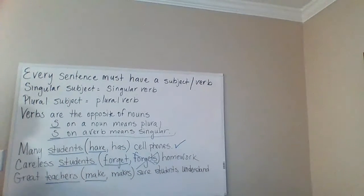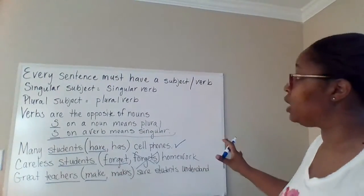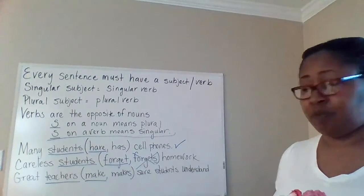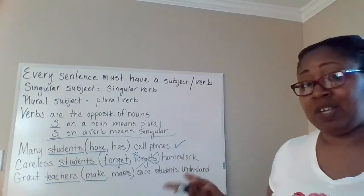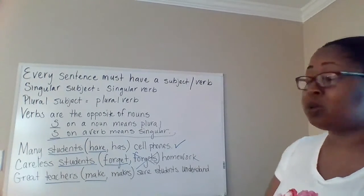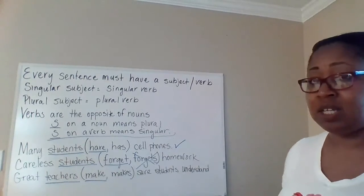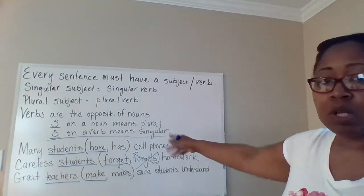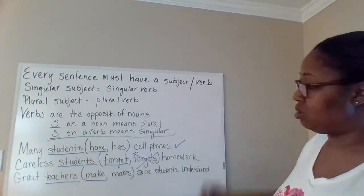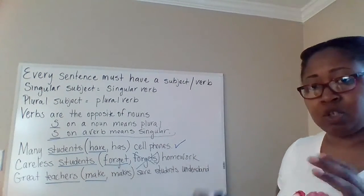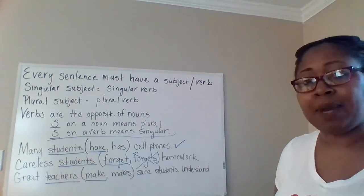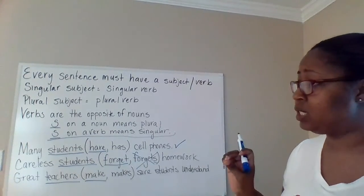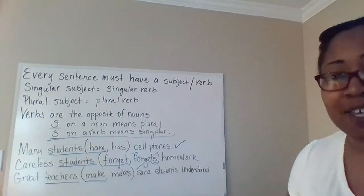So we've looked at a couple of things today. Remember that every sentence must have a subject and a verb — if you don't have one or the other, you have a fragment. If you have a singular subject, you must have a singular verb; if you have a plural subject, you must have a plural verb. Most importantly, verbs are the opposite of nouns: an S on a noun is plural, but an S on a verb means it's singular. We've gone through three sentences, processed out the subject, determined if it was singular or plural, and decided which verb to use. Make sure you look in the document section of these lessons for any handouts and extra practice. I'll see you guys next time.